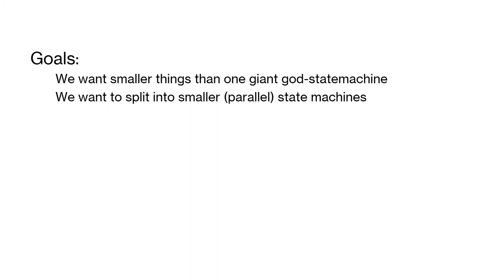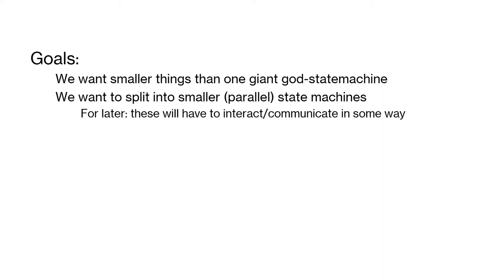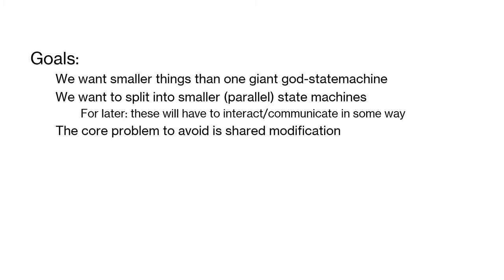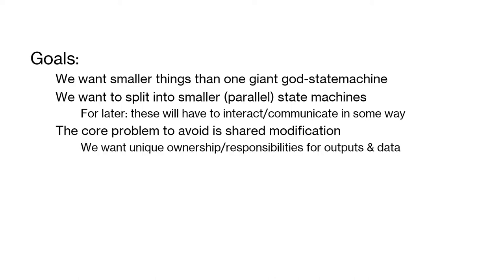We're going to end up with more state machines that run in parallel, since a state machine seems like a reasonable solution for creating things whose outputs depend on the order of inputs. We'll have to consider how these communicate or interact later. From our testability concerns, the core problem to avoid is shared modification. If we have two state machines that need to modify the same piece of data in a shared way, that's going to be a problem — let's see if we can avoid it altogether.